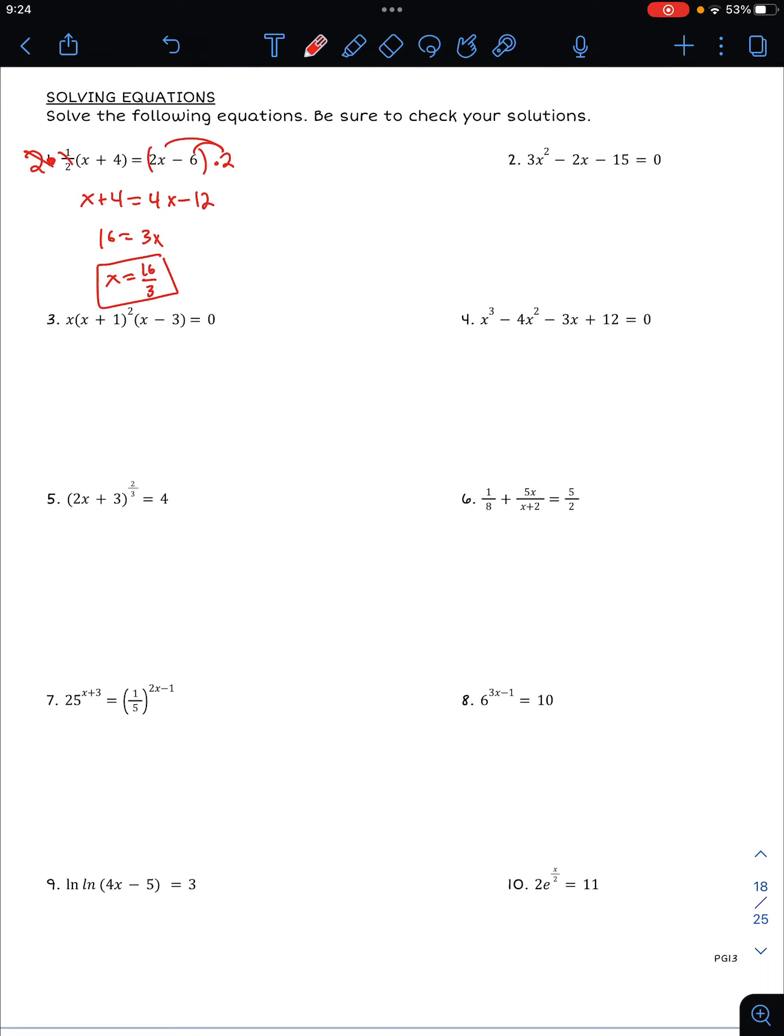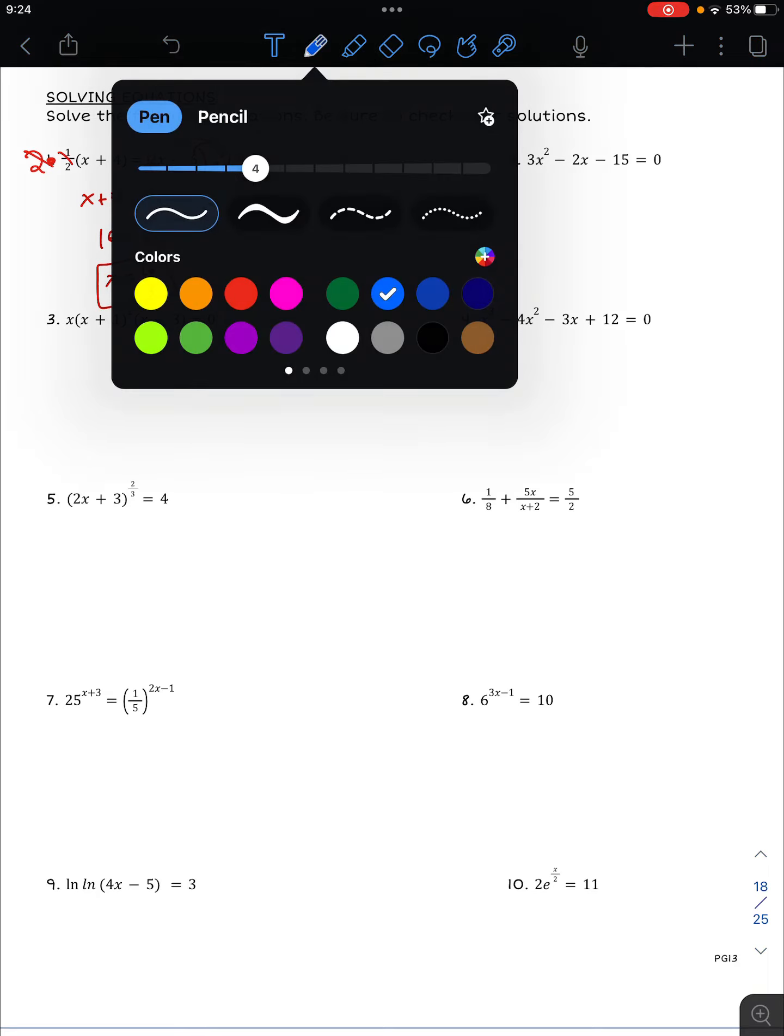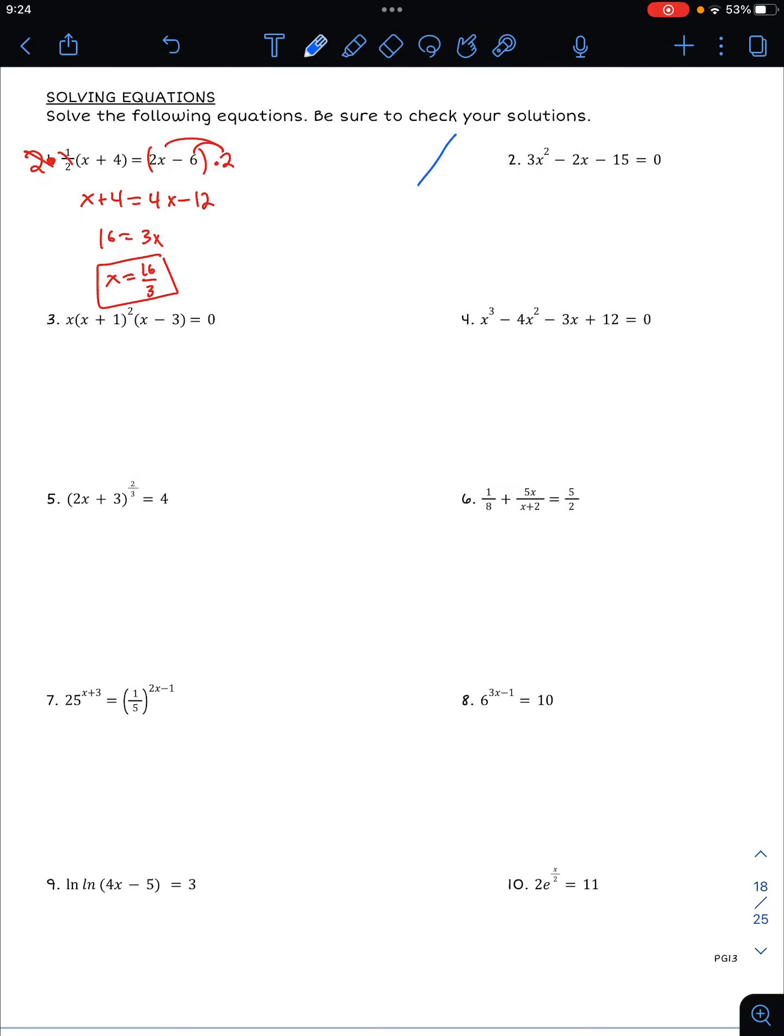Okay, moving on, we have a quadratic. We'd like to think it might factor. So products of AC, which is three times negative 15, negative 45, and adds to negative 2. Unfortunately, I don't think there are any integer values that satisfy that. So this is not factorable.